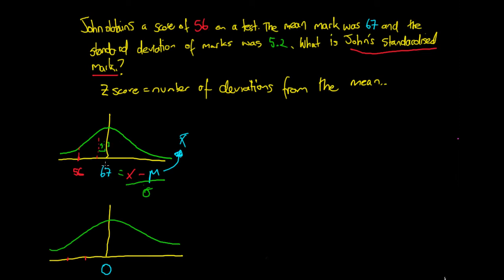And we can see that the distance between 56 and 67 is 11, and our standard deviation is 5.2. So we're going to expect to see that John's mark is roughly negative two standard deviations away from the mean.